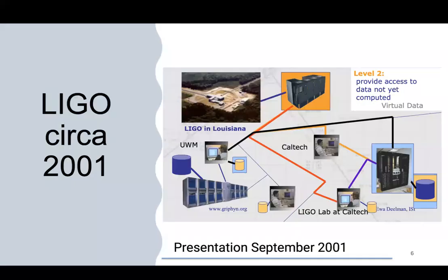In 2001, we worked with LIGO to develop a prototype where it would take data coming off the instruments and then process it. First, we needed to understand how the environment looked. They had data collected in the instruments, replicated in the environment — storing data in Milwaukee and also at Caltech in California. They also had computing distributed in the environment. So you had to deal with the notion of datasets being distributed and computing being distributed as well.